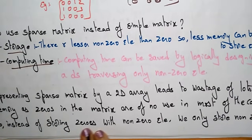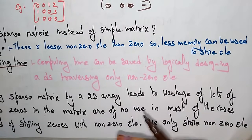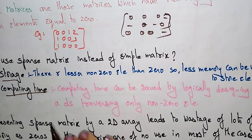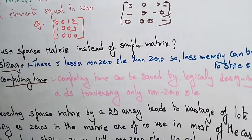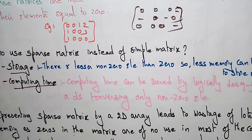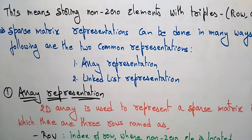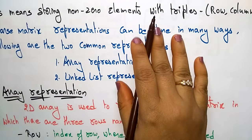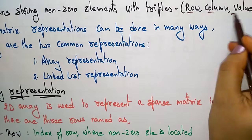Instead of storing zeros with non-zero elements, we only store non-zero elements. You just avoid the zeros and store only non-zero elements, so that storage wastage will be reduced. This means storing non-zero elements with triples — how we can store the non-zero elements by following the triples, that is row, column, and value.